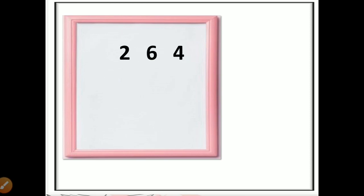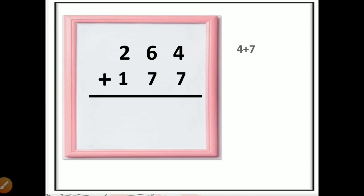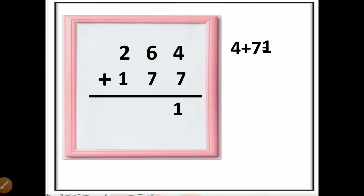Now we will do addition without a diagram directly. Suppose we have to add 264 with 177. First we add the ones position: 4 and 7 are in the ones position. Four plus seven equals 11. In 11, the digit in the ones place is 1, which comes in the ones place, and the other 1 is carry-forwarded to the tens place.